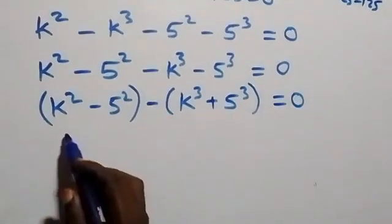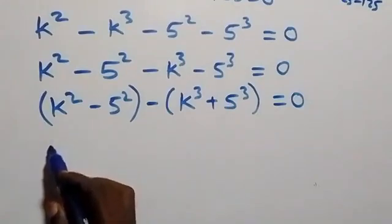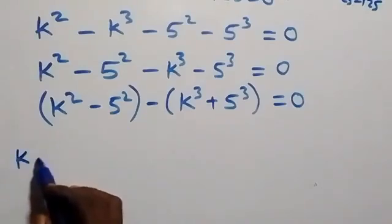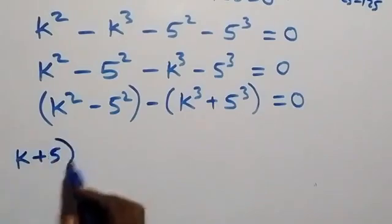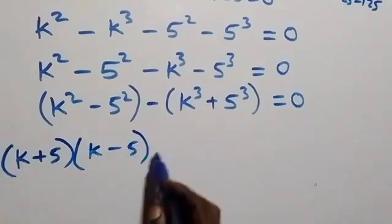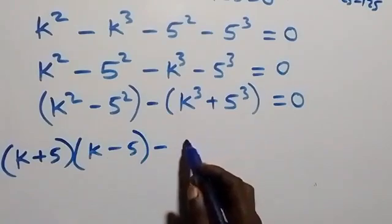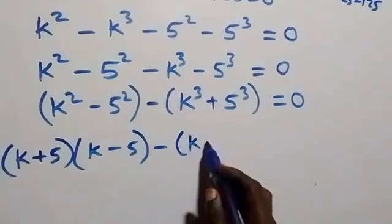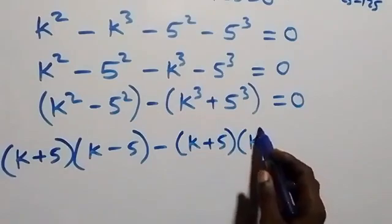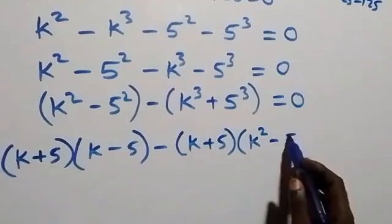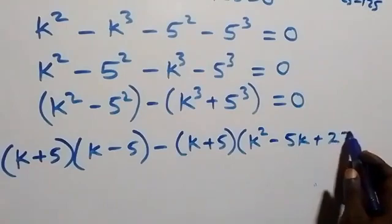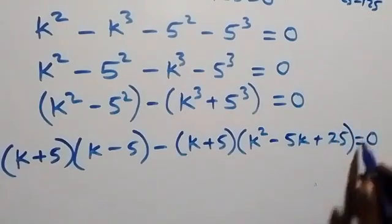Here we have the difference of two squares, so we can write that bracket as k plus 5 times k minus 5. Then applying the sum of cubes identity, the k cubed plus 5 cubed becomes k plus 5, times the bracket k squared minus 5k plus 5 squared, which is 25. This all equals zero.